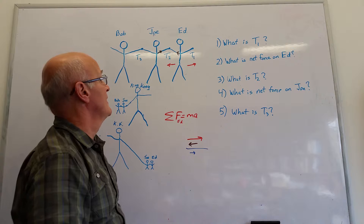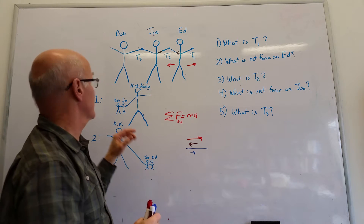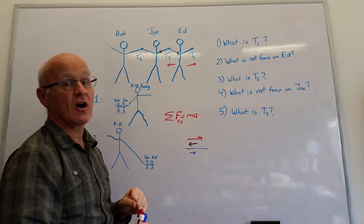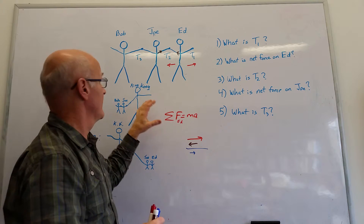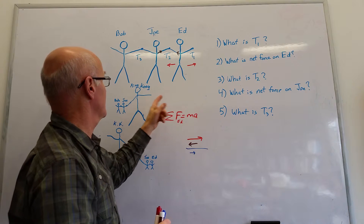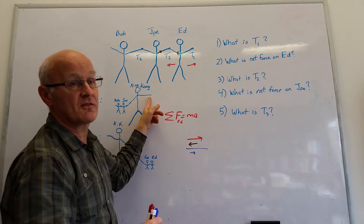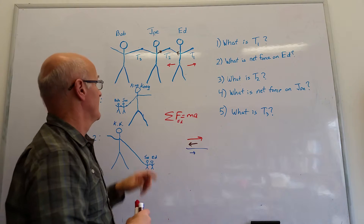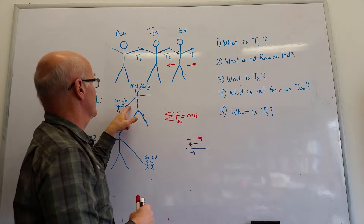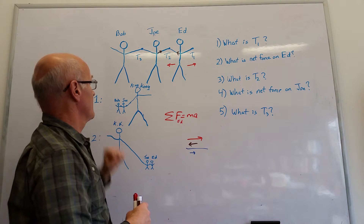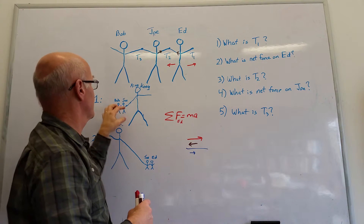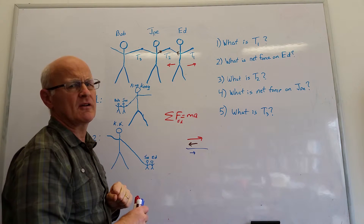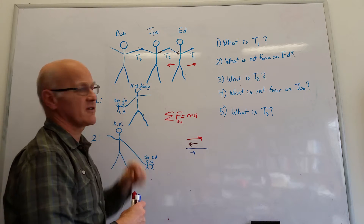I like to look at extreme cases. The first extreme: Joe, Bob, and King Kong are trailing, with King Kong as the leading dude. We're accelerating all three of them, so King Kong's leading arm is going to feel quite a bit of force because of his own mass plus Joe and Bob's mass. On his trailing arm, however, there's very little mass behind him, so he's not going to feel much of a tug — the force on his trailing arm will be pretty small compared to what he feels on his leading arm.